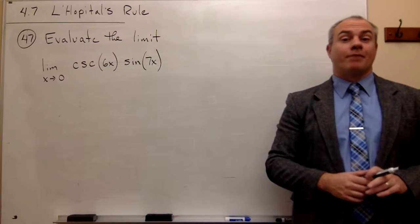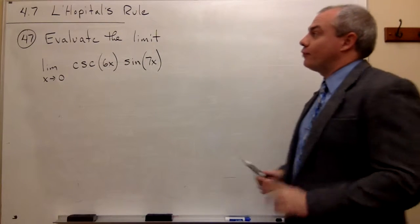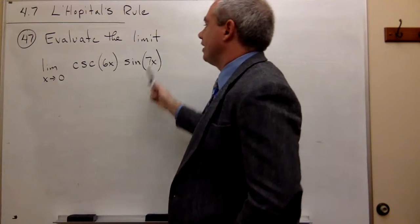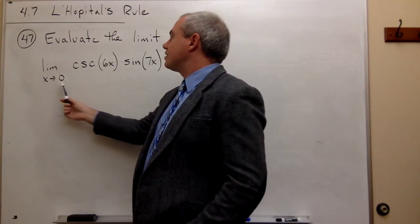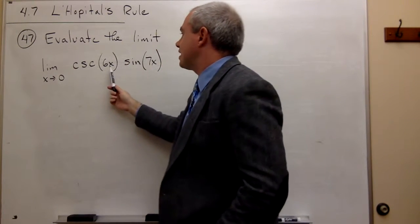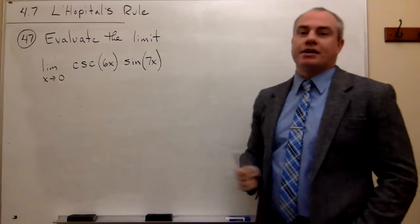Okay, let's look at problem number 47. In problem 47 we'd like to evaluate the limit as x goes to 0 of cosecant of 6x times sine of 7x.